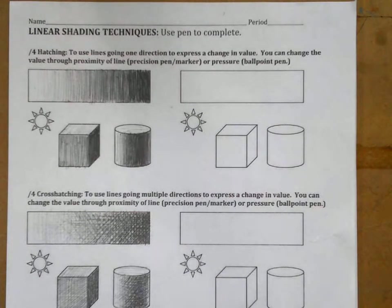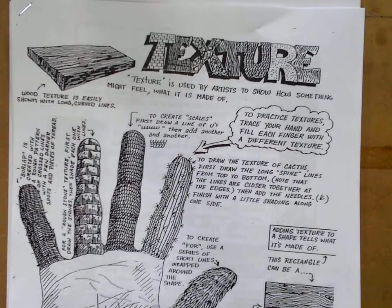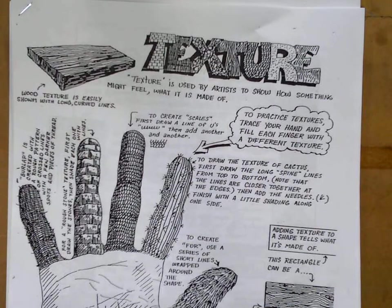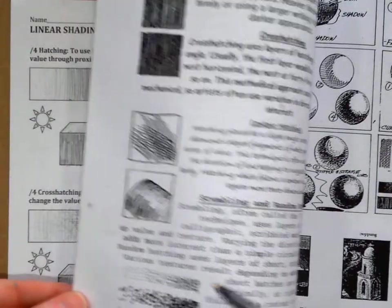Okay, we're going to work on some linear shading techniques. If you remember back when we did our scientific illustration, we were looking at different ways that you can create value and texture using line and dots. We did the stipple method, if you remember.